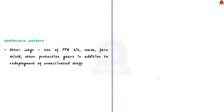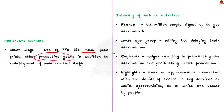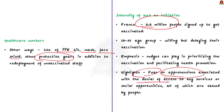Healthcare workers also have alternative protections — PPE kits, masks, face shields — so there is no need to force unvaccinated workers. France's compulsory vaccination policy may appear successful since 2.2 million people signed up within two days, but it has also created fear, apprehensions, and protests in society. It can lead to denial of access to key services and social opportunities, especially for vulnerable groups.